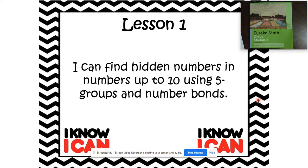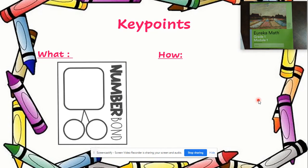Today we're doing lesson one. I started it a bit last Friday, but just to make sure that we understand it I'm going to go over it again. Our objective is: I can find hidden numbers in numbers up to 10 using five groups and number bonds. All that means is that we can find numbers that are hiding in numbers up to 10 by using our five groups — groups of five — and number bonds, which you should have learned from kindergarten.